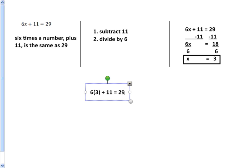If it's false, our answer is not correct. 6 times 3 is 18, plus 11 is equal to 29. 18 plus 11 is equal to 29. That's true. If it's true, that means that x does equal 3. So our solution is correct.